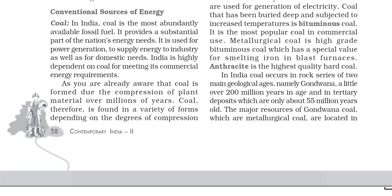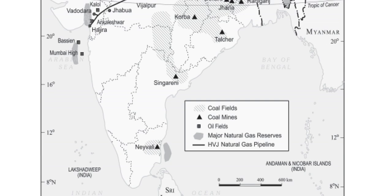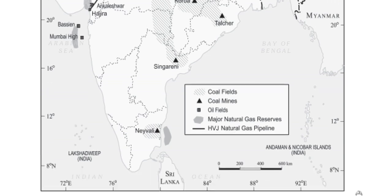In India, coal occurs in rock series of two main geological ages — Gondwana, which is a little over 200 million years old, and tertiary deposits which are about 55 million years old. Major resources are Gondwana coal, which is metallurgical coal. On the map, you can see where coal mines, oil fields, coal fields, and major natural gas reserves are located, indicated by symbols.